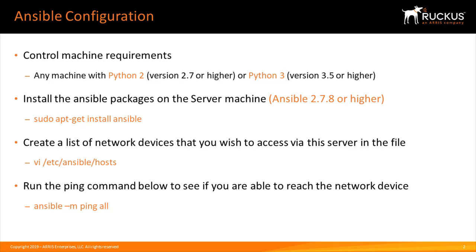The Ansible configuration requires the control machine to have Python 2 version 2.7 or higher, or Python 3. Install the Ansible packages using apt-get or pip install on a Linux machine. We need version 2.7.8 or higher. Create a list of network devices to manage in the default inventory file located at /etc/ansible/hosts.